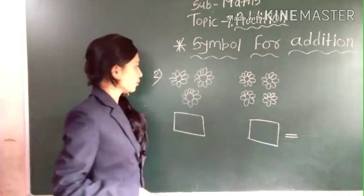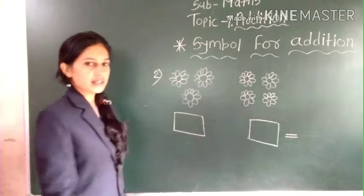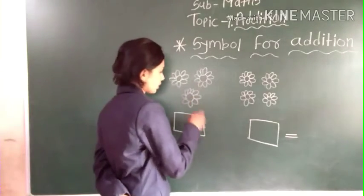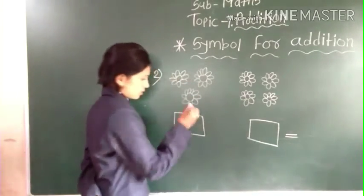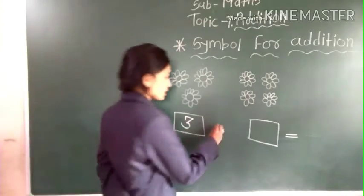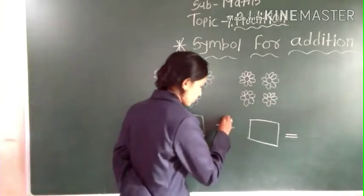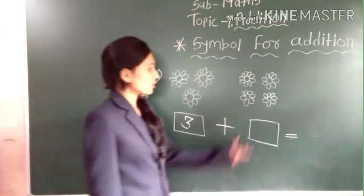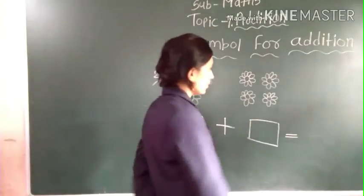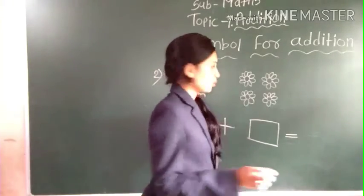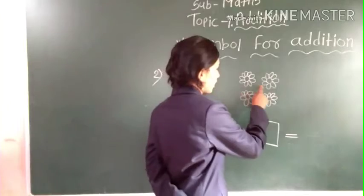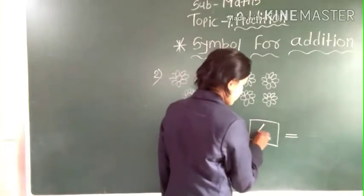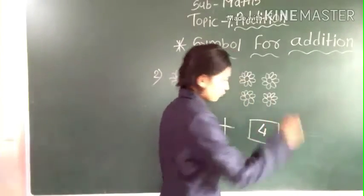Next — how many flowers are here? Let's count: one, two, three — three flowers. Plus. See here — how many flowers are here? Let's count: one, two, three, four — four flowers. So we write here four.